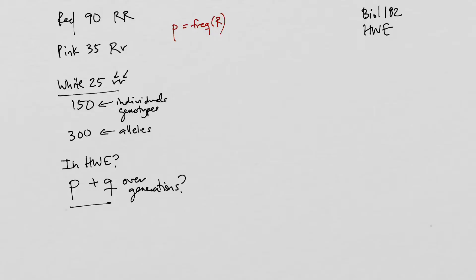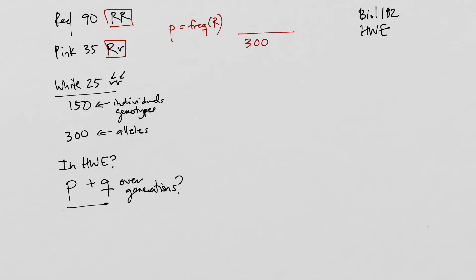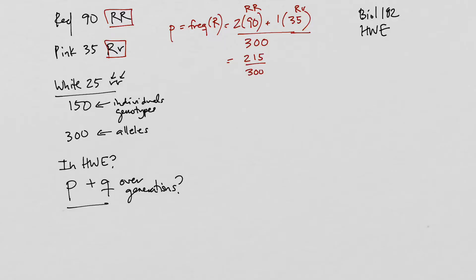We find big R in our homozygous dominant and in our heterozygous individuals. To calculate the frequency of big R, out of the 300 alleles present, we count two times 90 individuals who have big R, plus one times the number of heterozygous individuals (35) who have a big R. We count homozygous dominants twice and heterozygotes once, giving us 215 out of 300, which equals 0.72 rounded up.